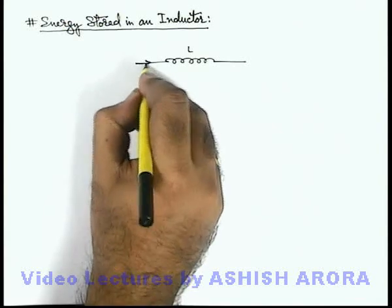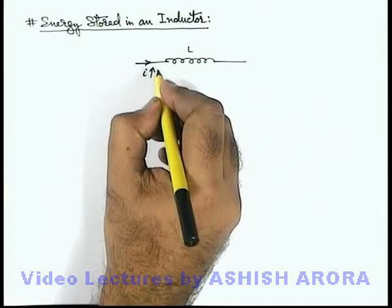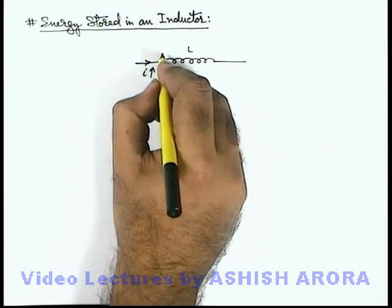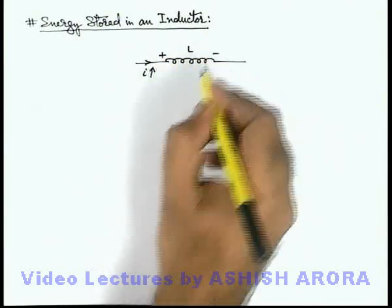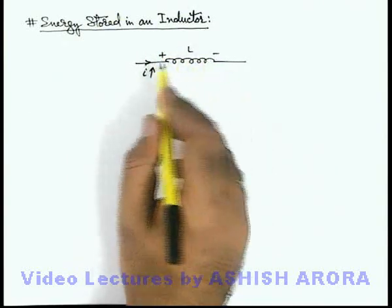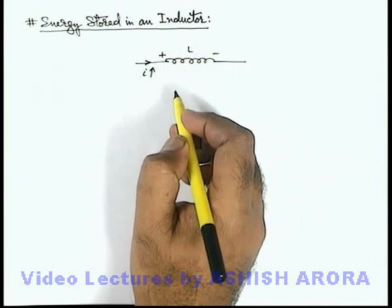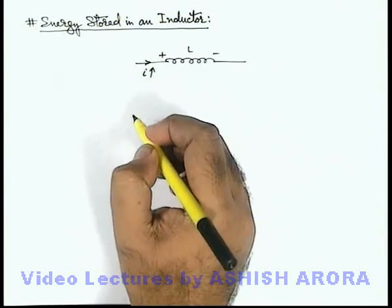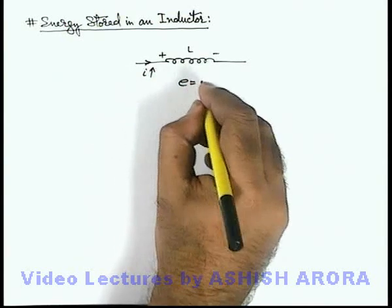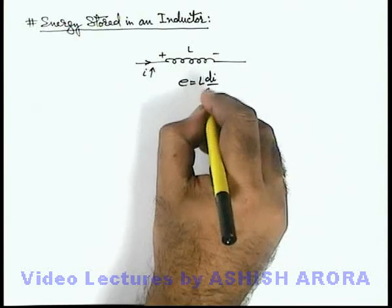If a current i is flowing through the inductor and increasing with time, then an EMF is induced such that its high and low potential terminals oppose the increase in current. The EMF induced will be L di/dt.